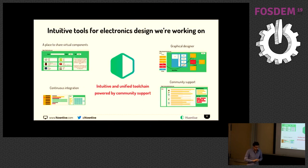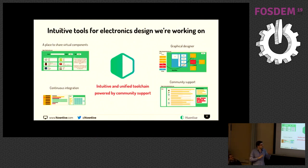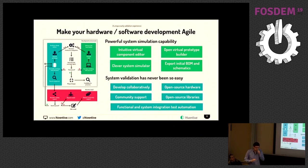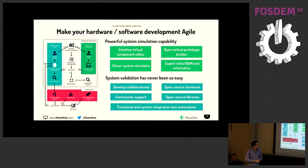We are currently working on intuitive tools for design. We would like to provide a place to share what we call virtual components — models. A continuous integration system so people can directly test their software on their hardware to decrease regression. A graphical designer to assemble different models, and of course community support. We believe we can make hardware and software development more agile: with a more intuitive virtual component editor, open-source virtual prototype builders, and a clever system simulator. From the description of the virtual prototype, we'd like to export initial bills of materials and schematics, enabling more collaborative development, open-source software community, and functional system integration test automation.